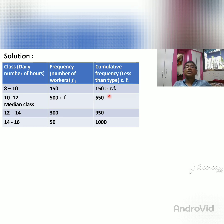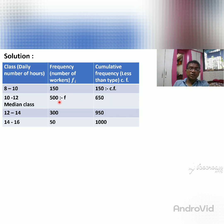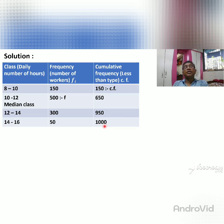The cumulative frequency is calculated as follows: the first class frequency 150 is written as-is. Then 500 plus 150 gives 650. Then 650 plus 300 gives 950. Then 950 plus 50 gives 1000. So the total frequency n equals 1000.